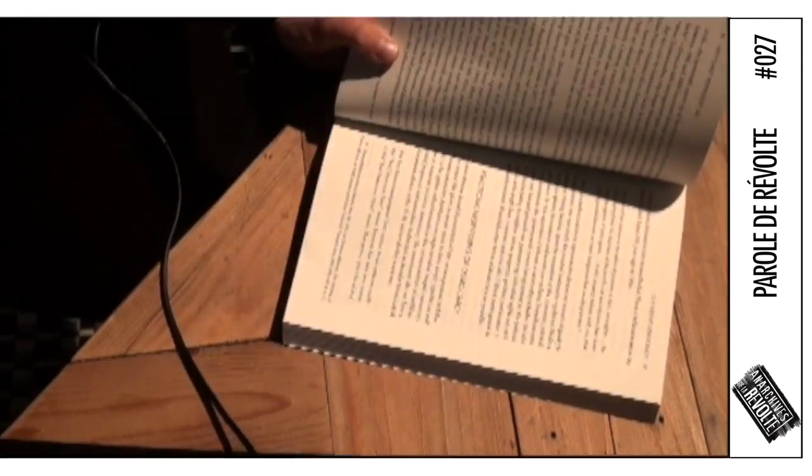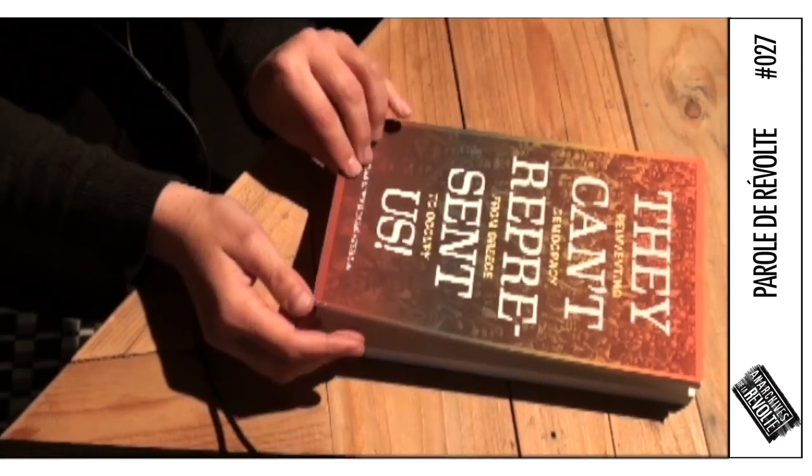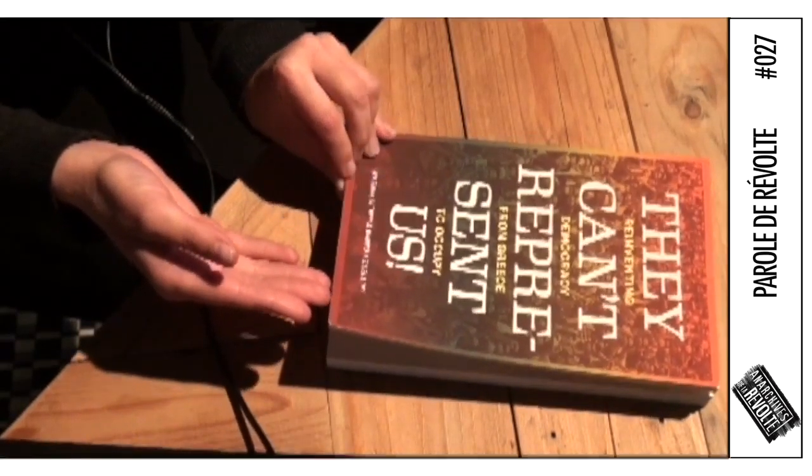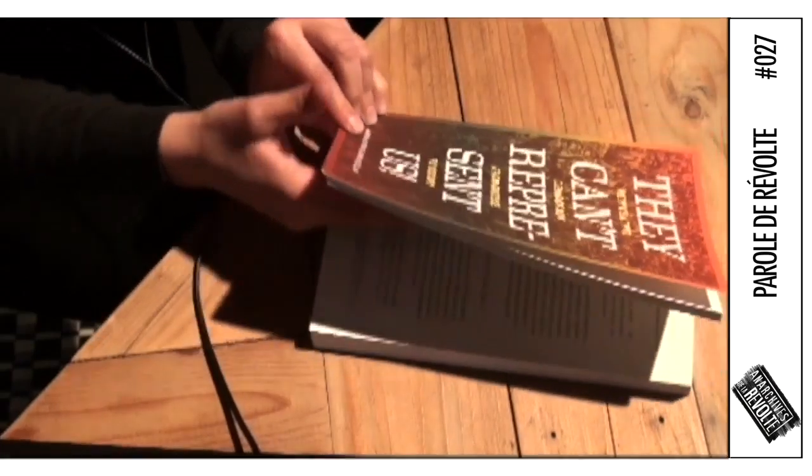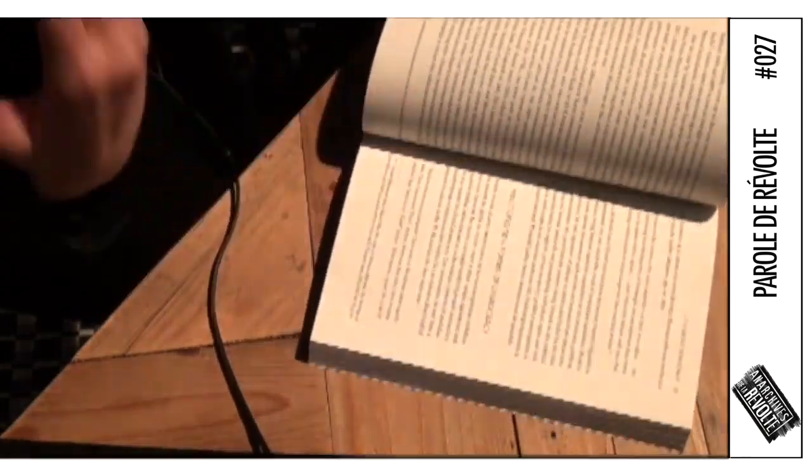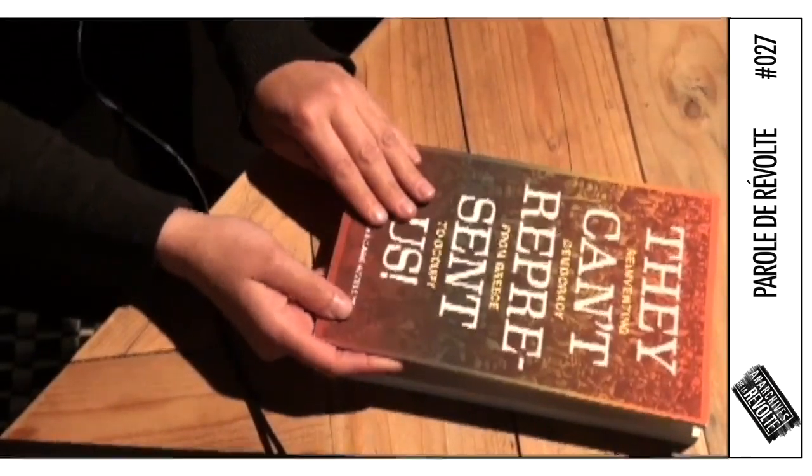I'm a participant in this show and I decided to choose They Can't Represent Us by Marina Sidrin and Dario Azzolini. Essentially I chose this book because it's a reflection from people who participated in the movements of 2011 globally and it's a comparative look of different social movements.